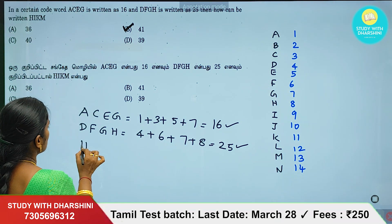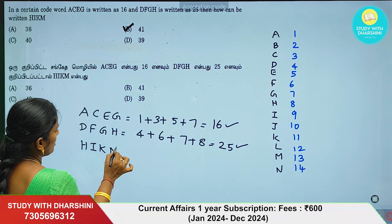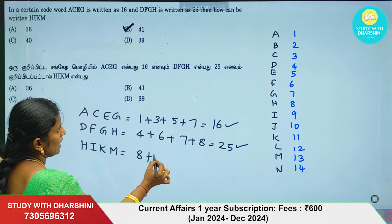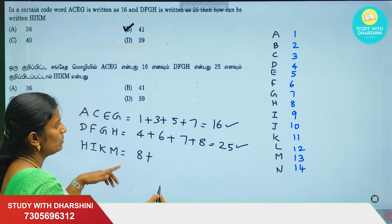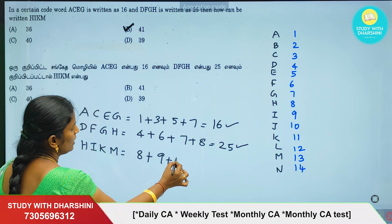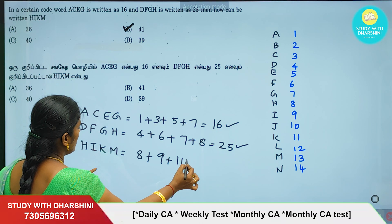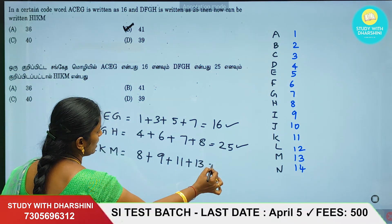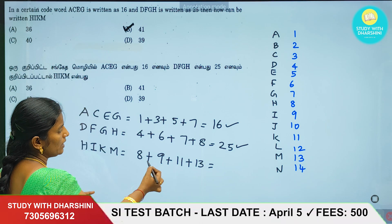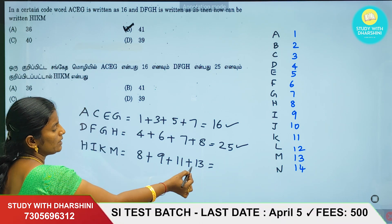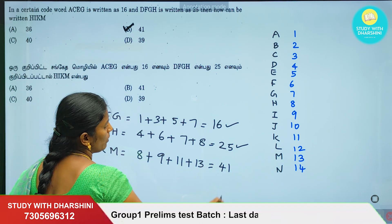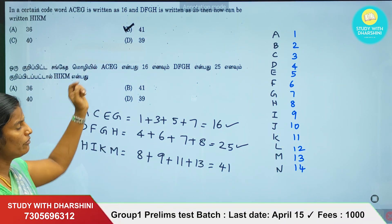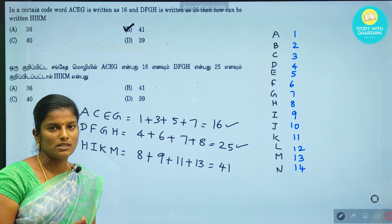So the pattern applies to: H, I, K, M. H value is 8, I value is 9, K value is 11, M value is 13. If you add: 8+9+11+13 equals 41. The answer is option B — 41.